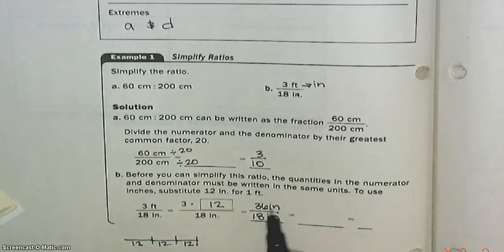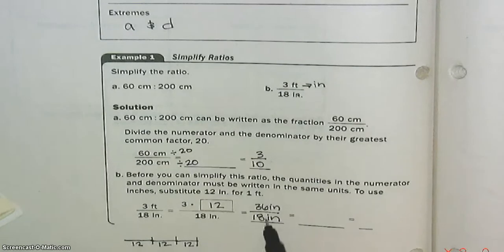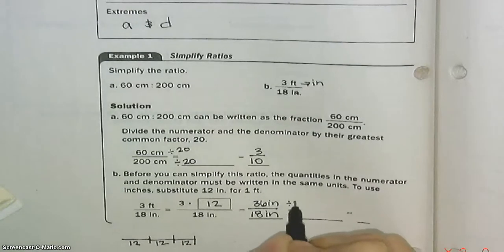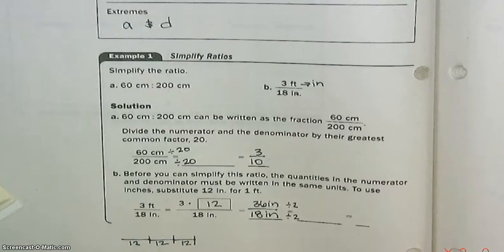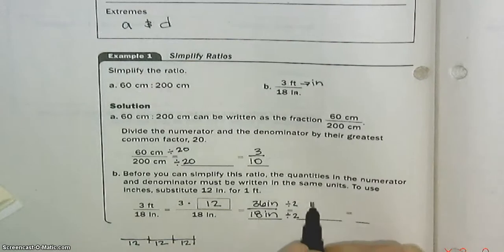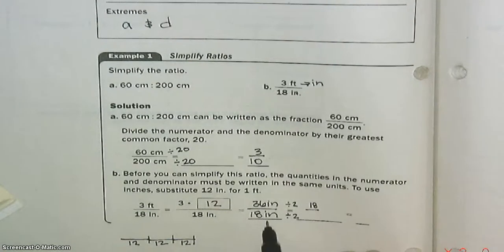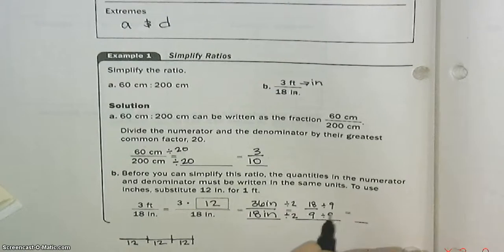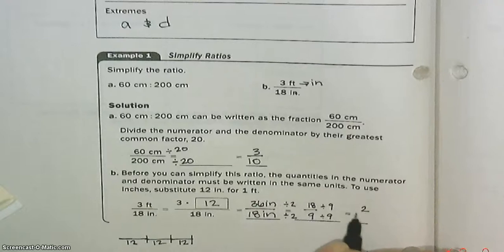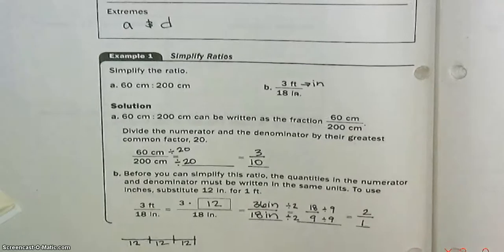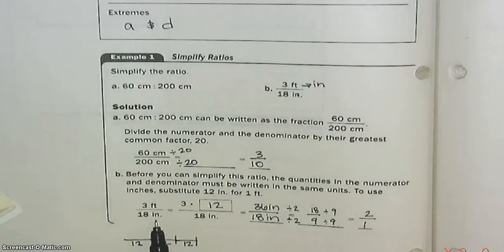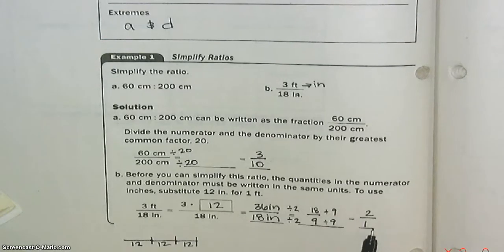We need to keep those units the same. Now we need to simplify. What goes into 36 and 18? Let's say you realize 2. We'll just take it easy this time. 36 divided by 2 is 18, 18 divided by 2 is 9. We can keep going further. 9 goes into both of these. 18 divided by 9 is 2, 9 divided by 9 is 1. So our ratio is 2 to 1. 3 feet to 18 inches is the same thing as 2 to 1.